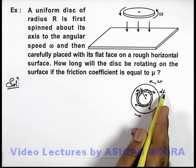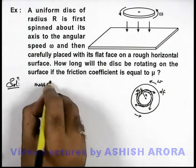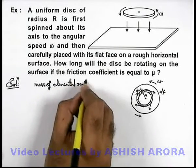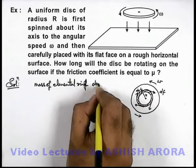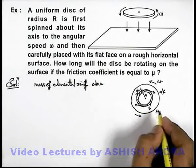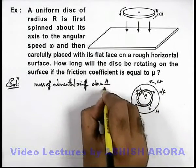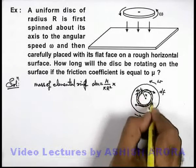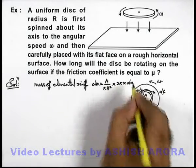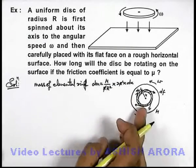To calculate the value of this friction, first I will find the mass of the elemental ring. This mass of elemental ring dm can be written as, let's consider its mass is m, so the mass of this elemental ring can be written as mass per unit area, that is m by πR² multiplied by the area occupied by the ring, which is 2πx dx. In this situation, π gets cancelled out and I will get the mass of this ring.